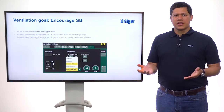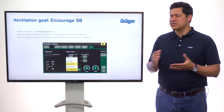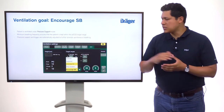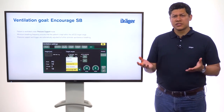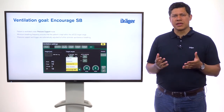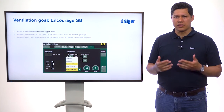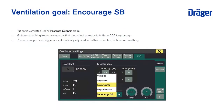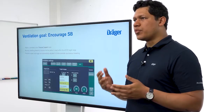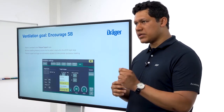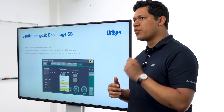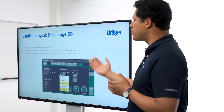The third ventilation goal is Encourage Spontaneous Breathing. Under this mode, the patient is ventilated under pressure support mode. A minimum breathing frequency ensures the patient is kept within the ETCO2 target range. Pressure support and trigger are automatically adjusted to further promote spontaneous breathing.